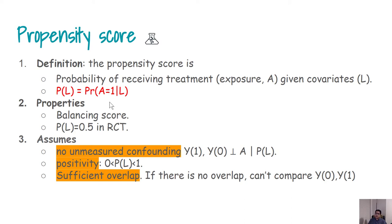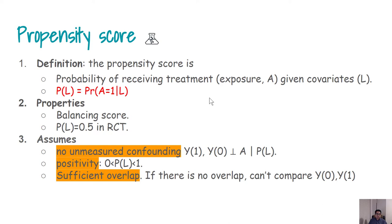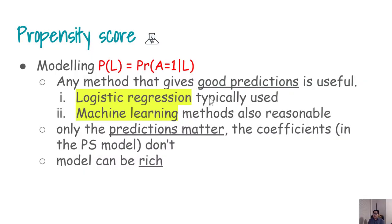There should be sufficient overlap. If there is no overlap between the treated and the control group, then we cannot estimate — for example, the ATT that we described in one of the previous videos — that cannot be estimated if we do not have sufficient overlap. Generally speaking, our exposure variables are binary variables.